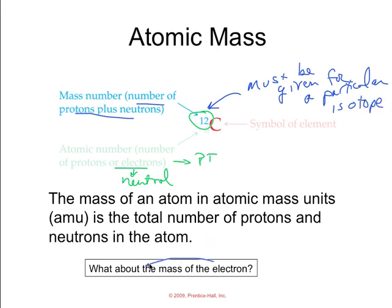We answered this question: What about the mass of an electron? It is very small and ignored. This actually refers to this comment here, where the mass of an atom in atomic mass units is the total number of protons and neutrons in the atom.